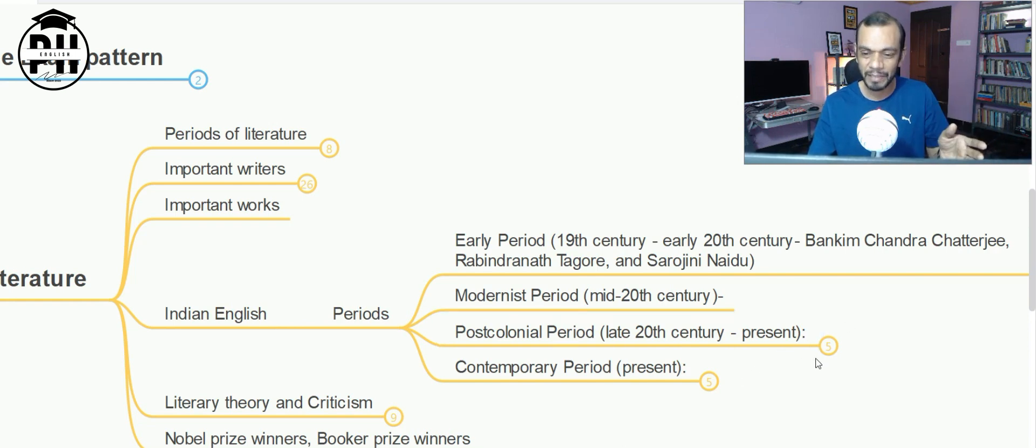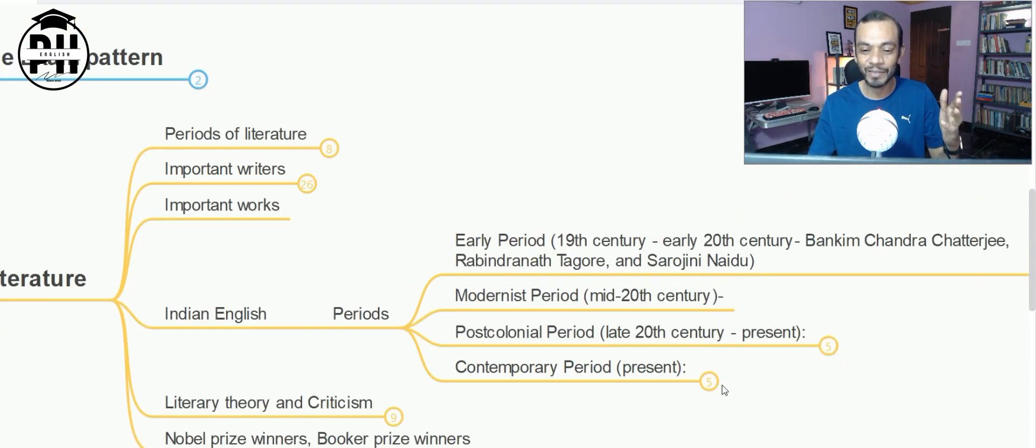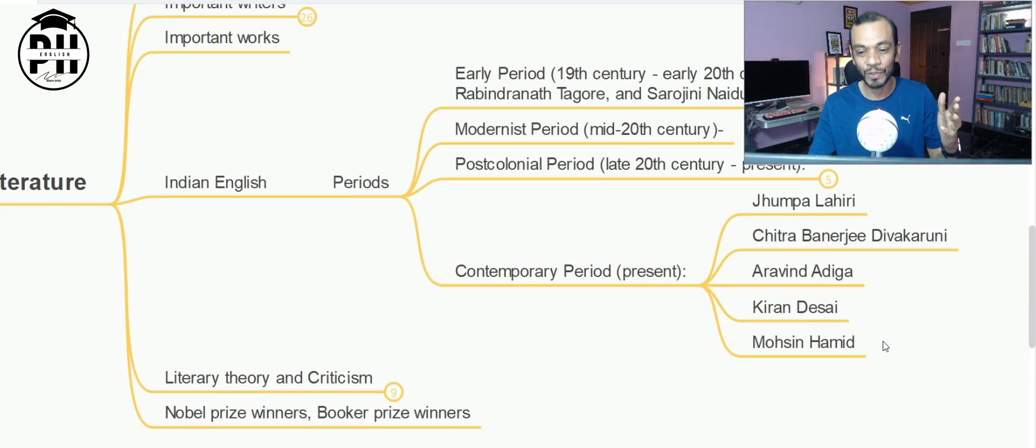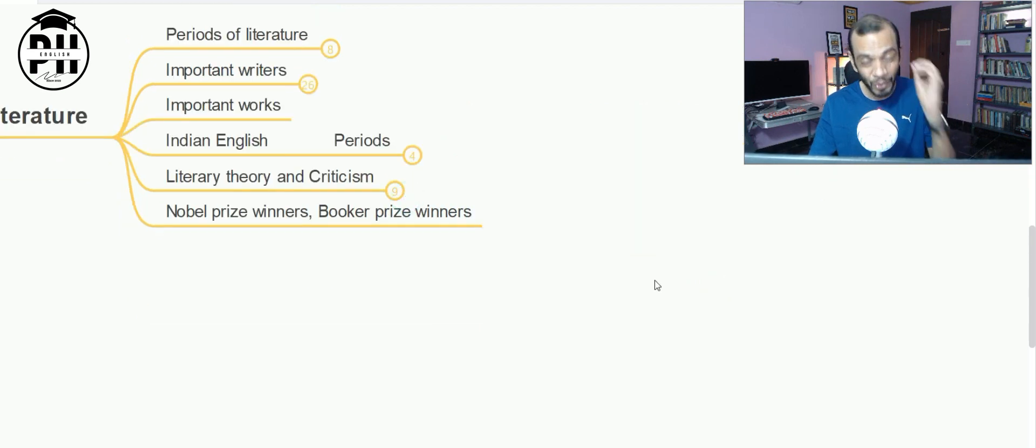Study the periods of Indian English literature. There are four periods generally: early 19th century, modernist period, post-colonial period, and contemporary period. Also look for the writers like Salman Rushdie, Arundhati Roy, Vikram Seth, Rohinton Mistry, old writers like Tagore, Sarojini Naidu, Bankim Chandra Chatterjee, Mulk Raj Anand, Raja Rao, R.K. Narayan. And contemporary, we will also look for Jhumpa Lahiri, Chitra Banerjee, Aravind Adiga, Kiran Desai, Mohsin Hamid.